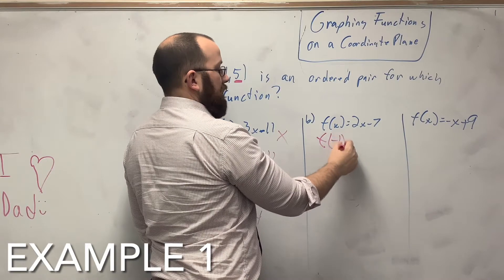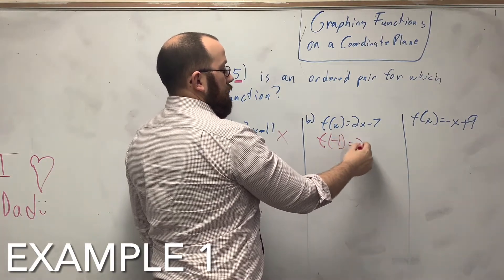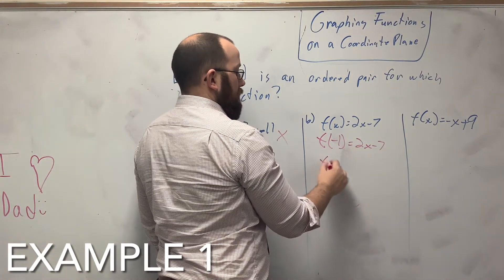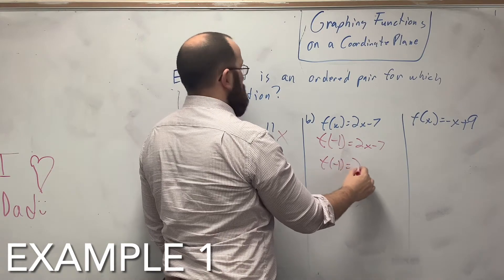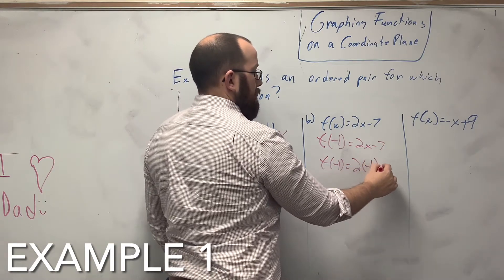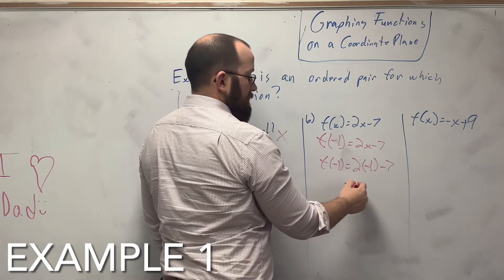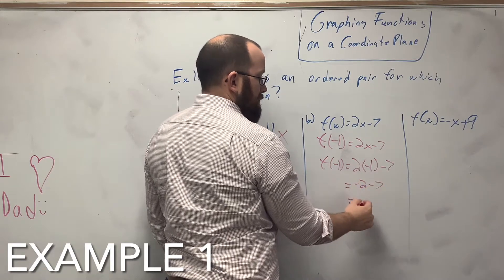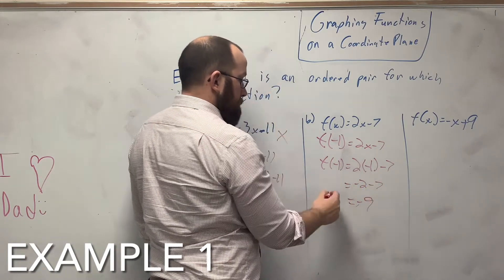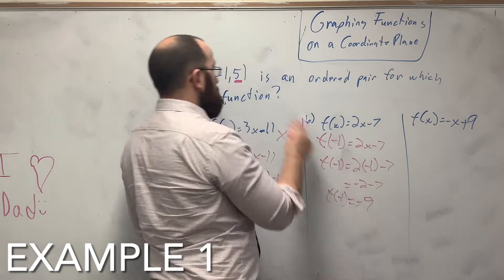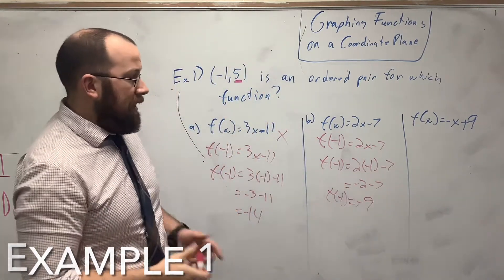I'm still going to keep using negative 1. So f of negative 1 equals 2 times negative 1 minus 7. So that's negative 2 minus 7, which is negative 9. Is that the same thing as 5? No. So that's not a function either.